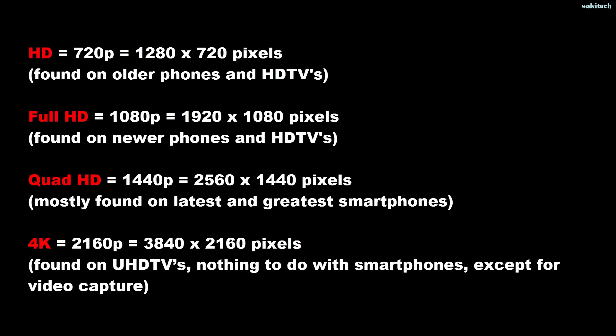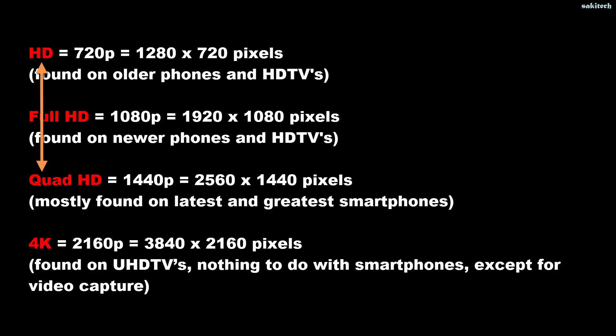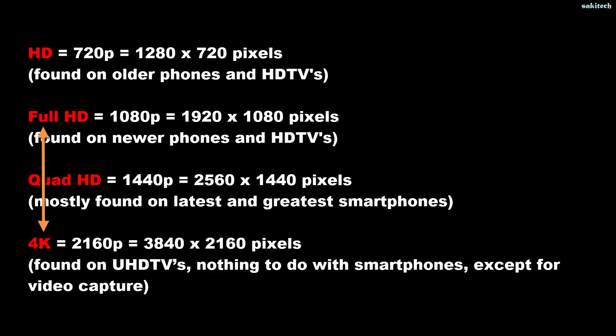Here's a quick summary: HD is 720p, found on older phones and HD TVs. Full HD is 1080p, common on most new phones and HDTVs. Quad HD is 1440p, found on the latest smartphones. 4K is 2160p, found on ultra high definition TVs and used when a phone can record at 4K. Remember: Quad HD is four times regular HD, and 4K is four times Full HD — don't confuse the two.